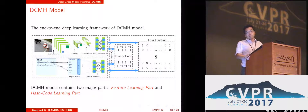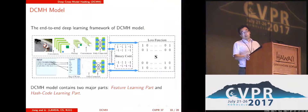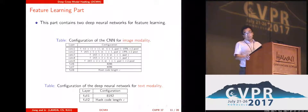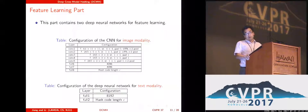The model is shown as follows. It contains two parts: the left part is the feature learning part and the right part is the hash code learning part. We use a deep neural network to perform feature learning. Specifically, we use a convolutional neural network for the image modality, and we design a deep neural network for the text modality. The deep neural network for text modality is a fully connected network.